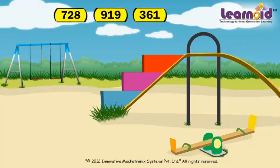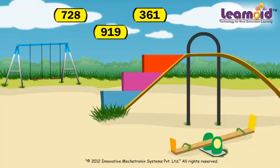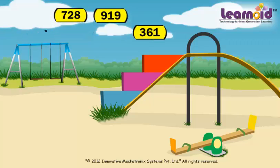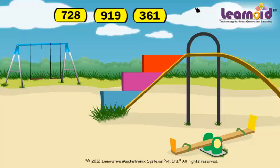For example, the numbers are 728, 919, and 381. We have to arrange these numbers in descending order. Descending order means arranging numbers from the greatest number to the smallest number.